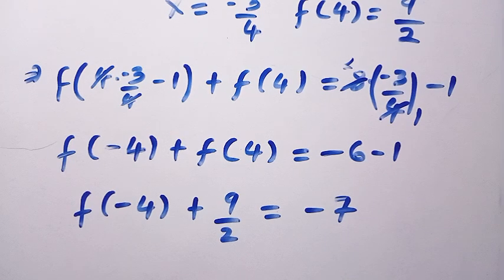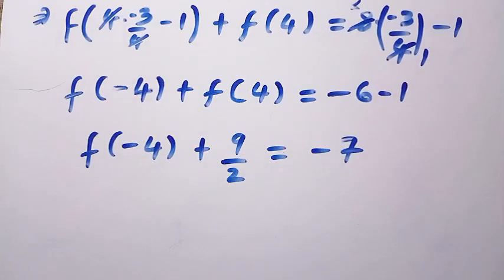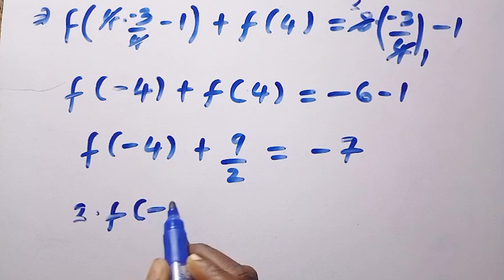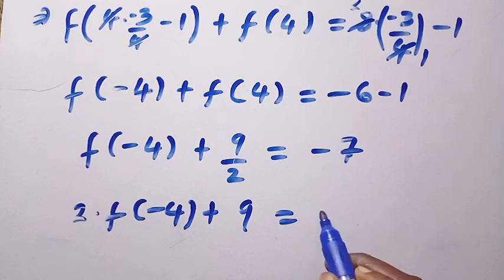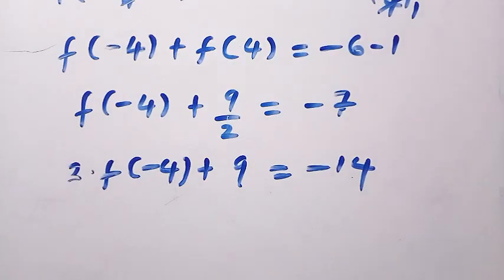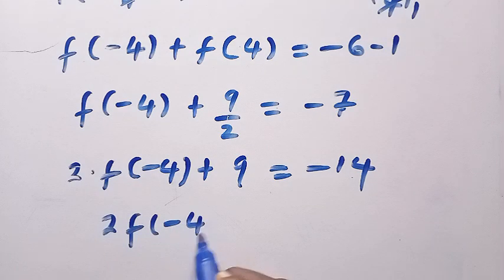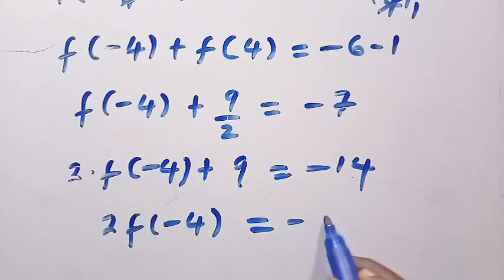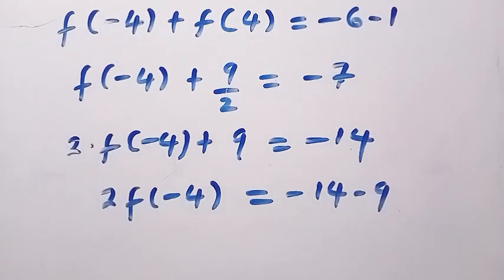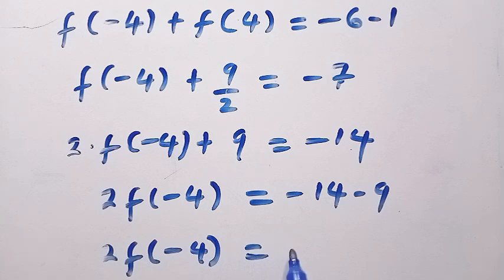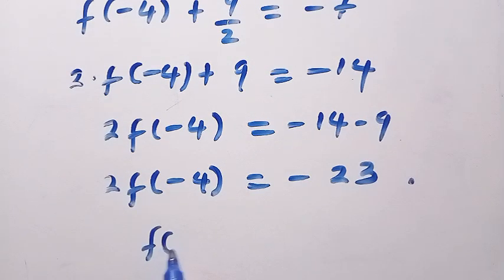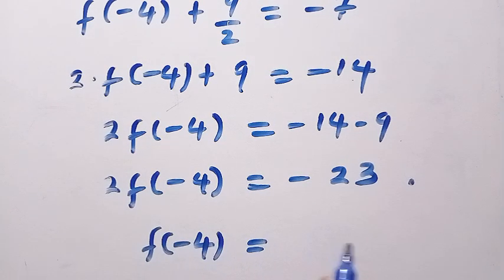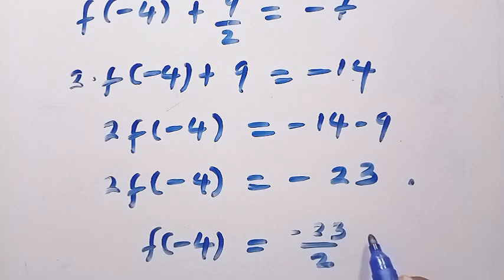To solve for f of minus 4, multiply both sides by 2: 2 times f of minus 4 plus 9 equals minus 14. Then we have 2 times f of minus 4 equals minus 14 minus 9, which gives us minus 23. By dividing both sides by 2, we get f of minus 4 equals minus 23 divided by 2. So this is the value of f of minus 4. And we can still solve this in another beautiful way.